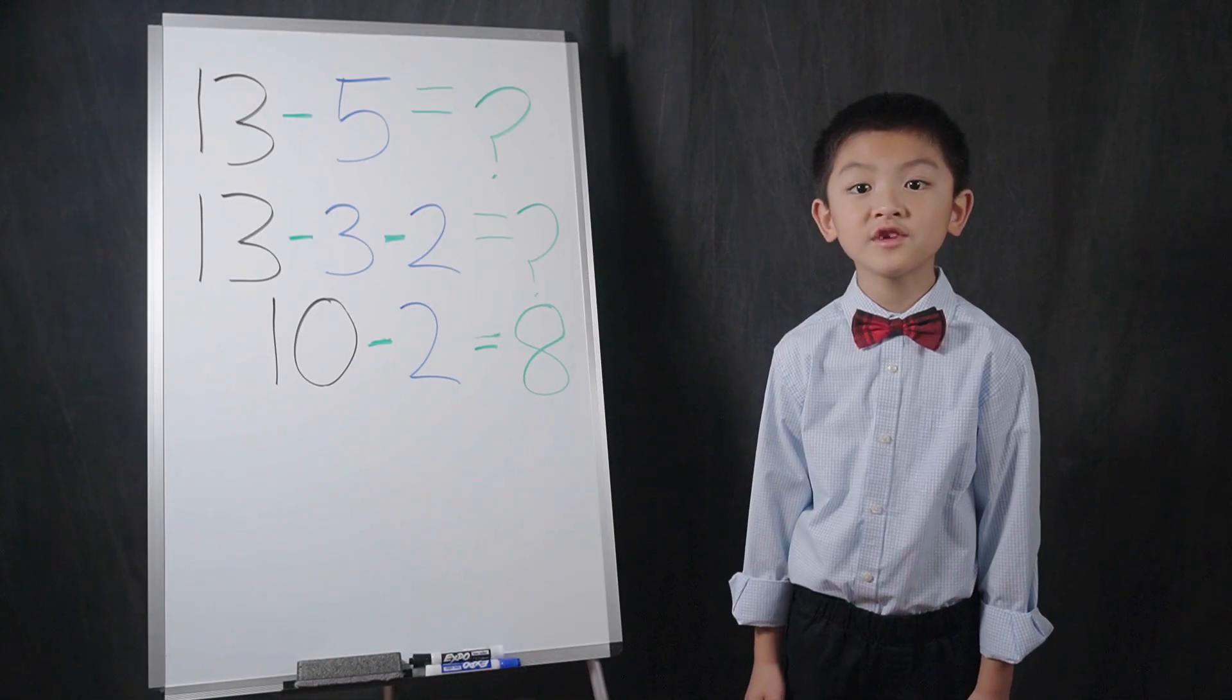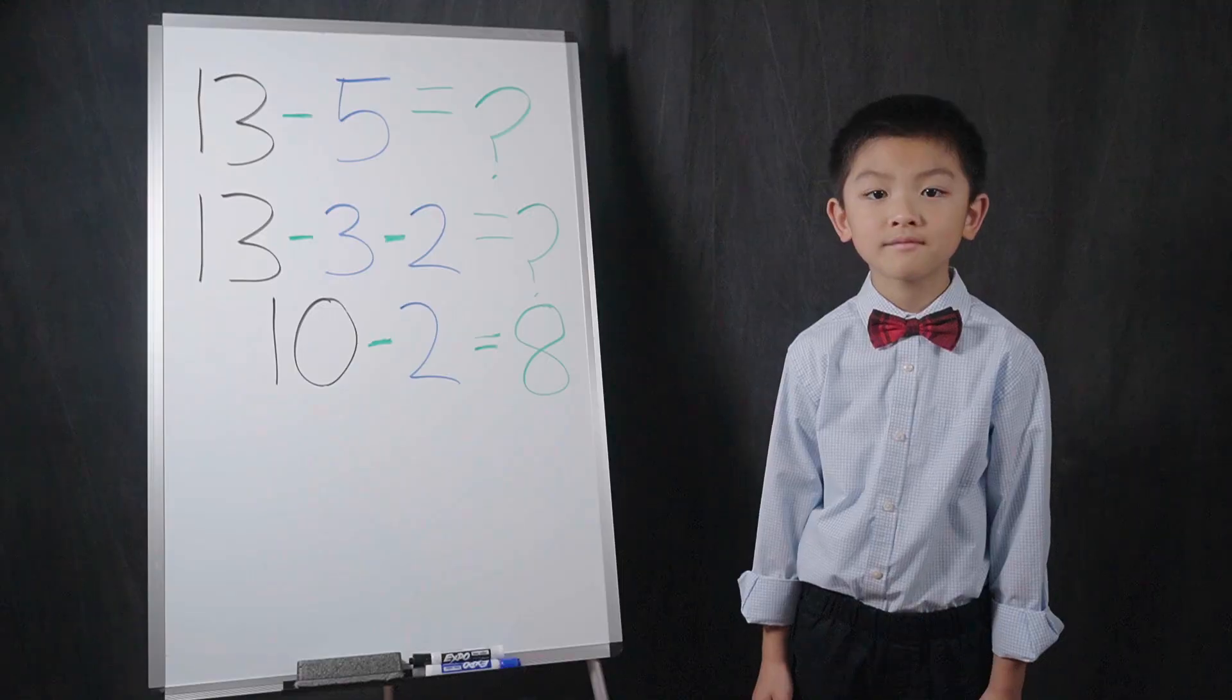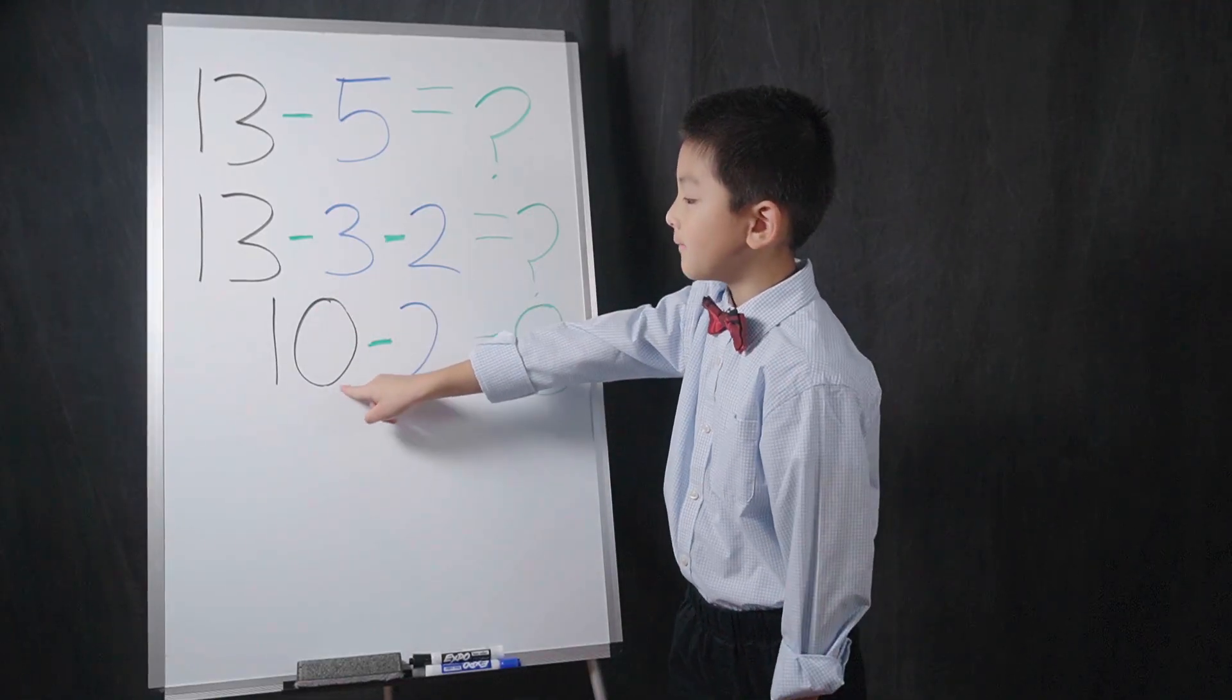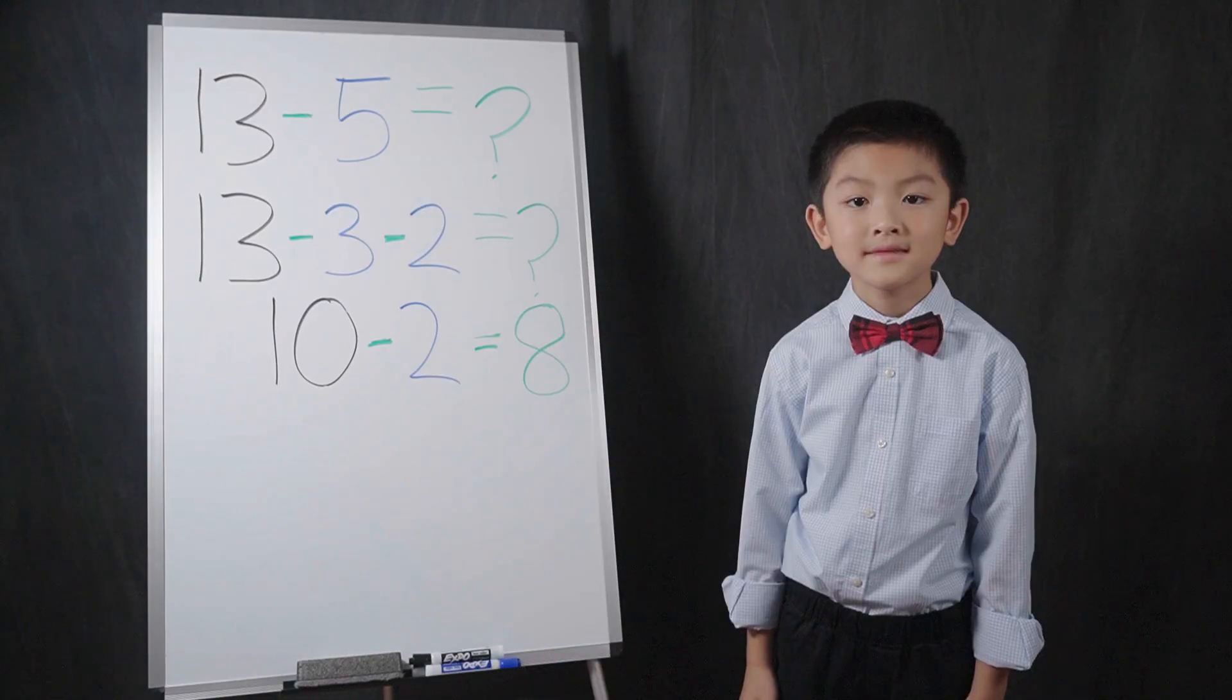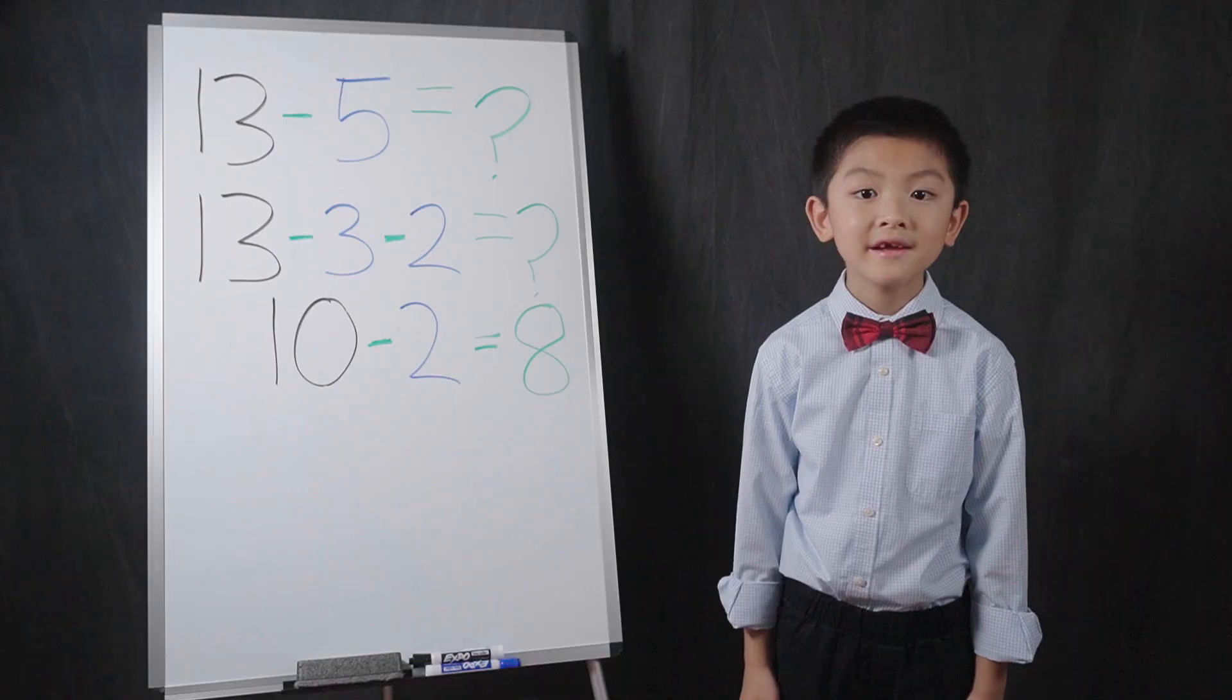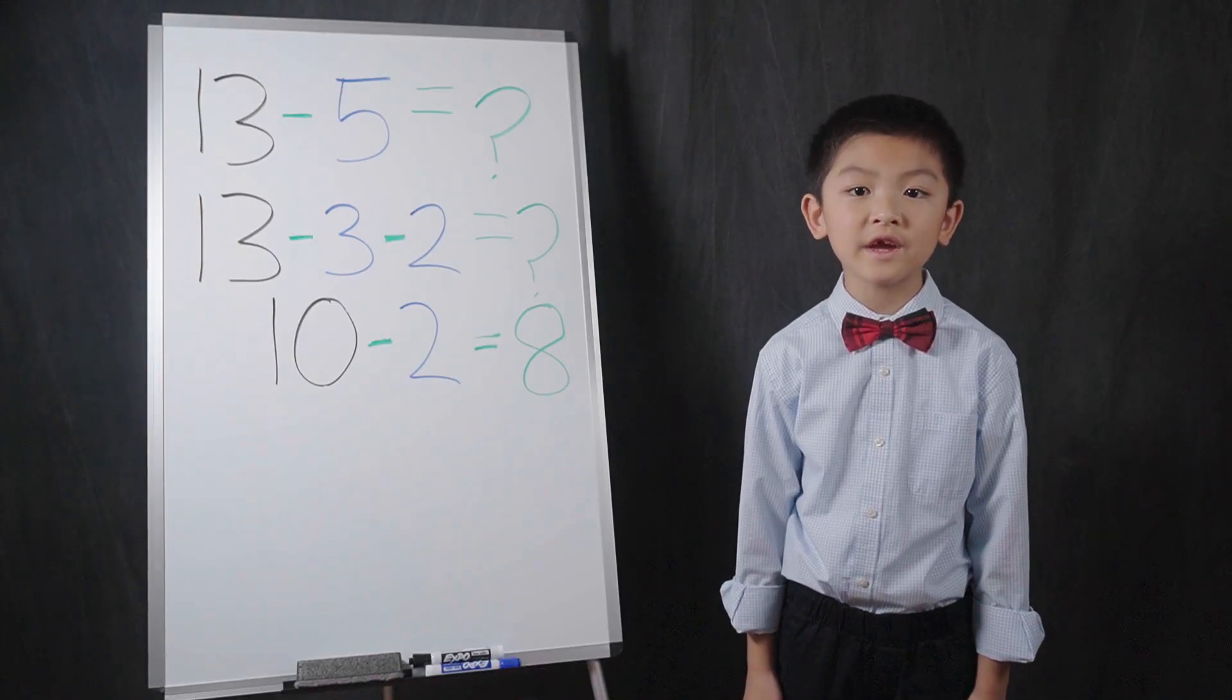So, this becomes 13 minus 3 minus 2. 13 minus 3 equals 10. I then subtract the leftover 2 to arrive at 8. 13 minus 5 equals 8.